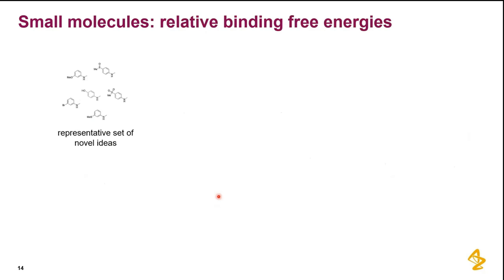The biggest impact of MD simulations in the small molecule world is relative binding free energies. We often end up with a representative set of novel ideas around an initial hit. We have the initial hit and a whole set around it — from enumeration, from REINVENT, whatever. These are 2D structures, and what we want is insight into whether it would be a good idea to pursue this or that derivative of the initial hit.